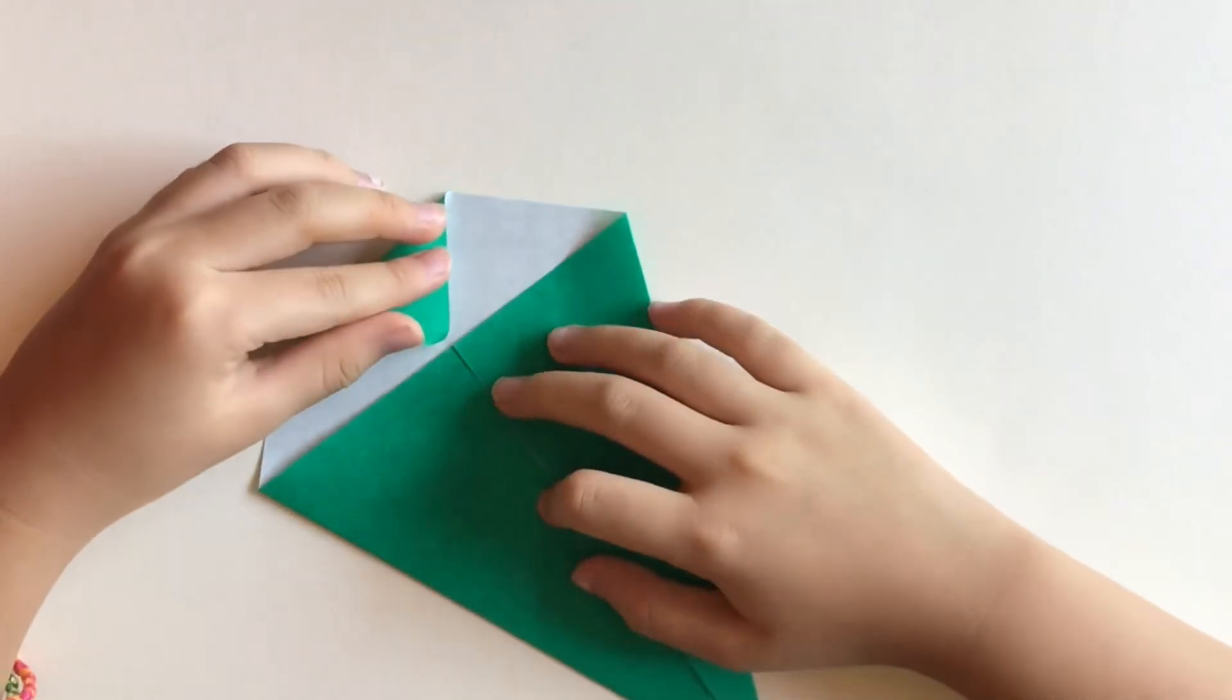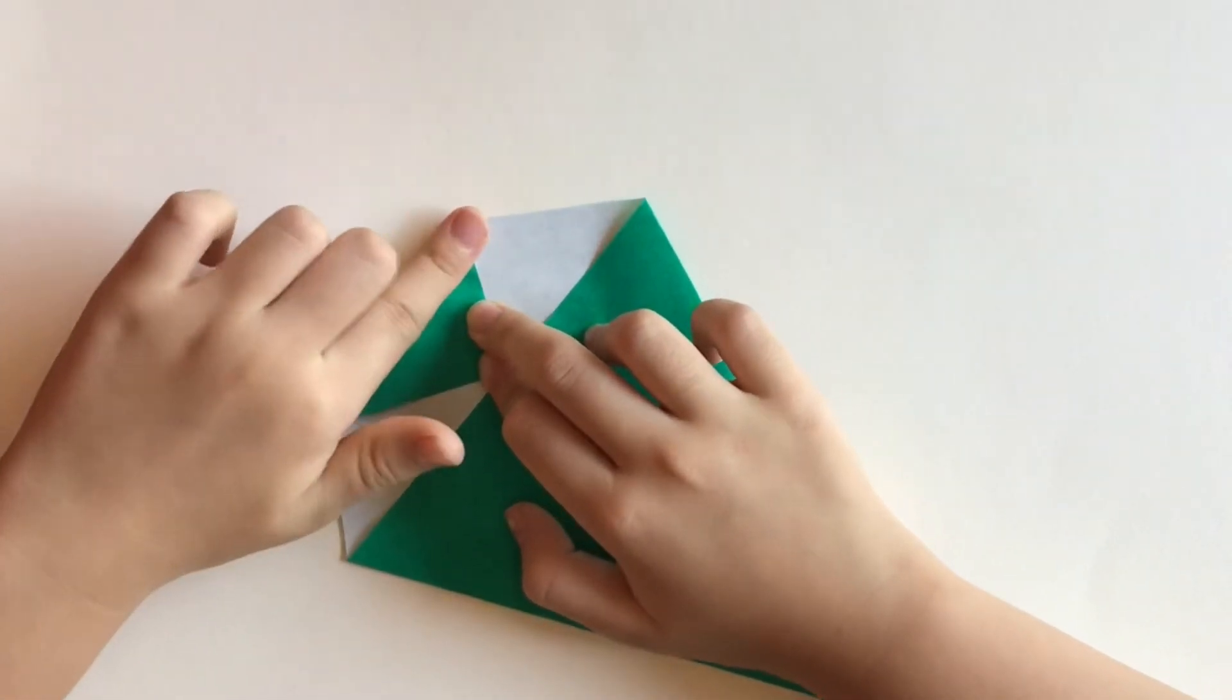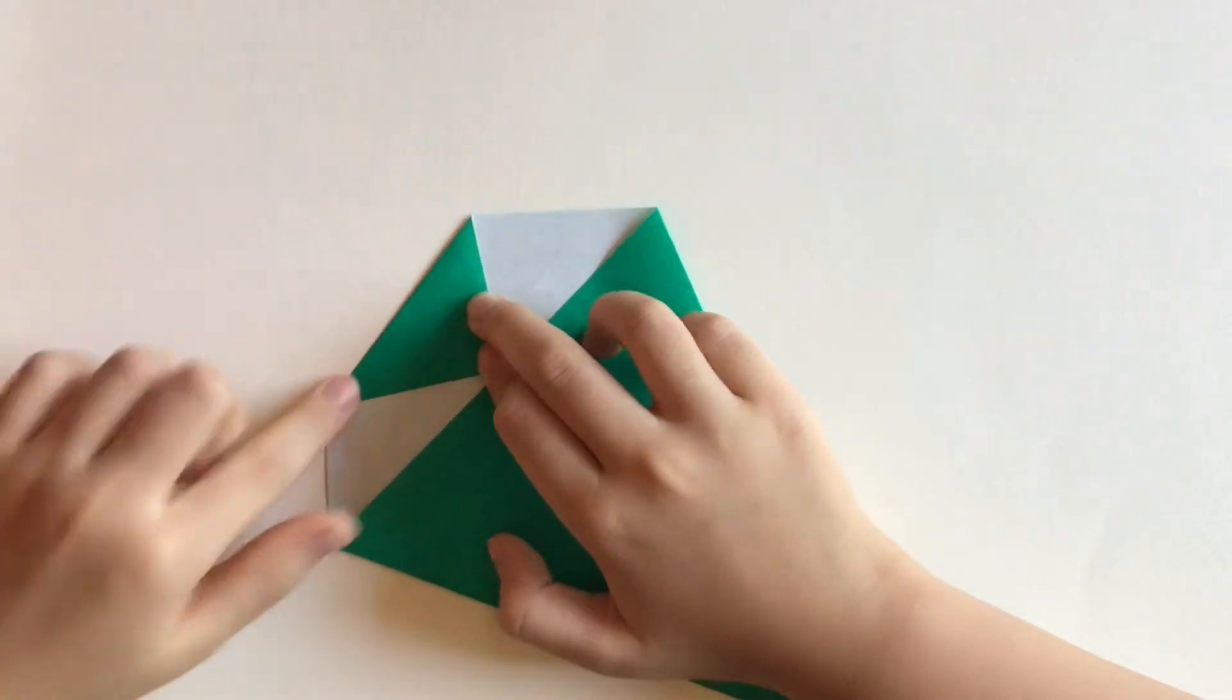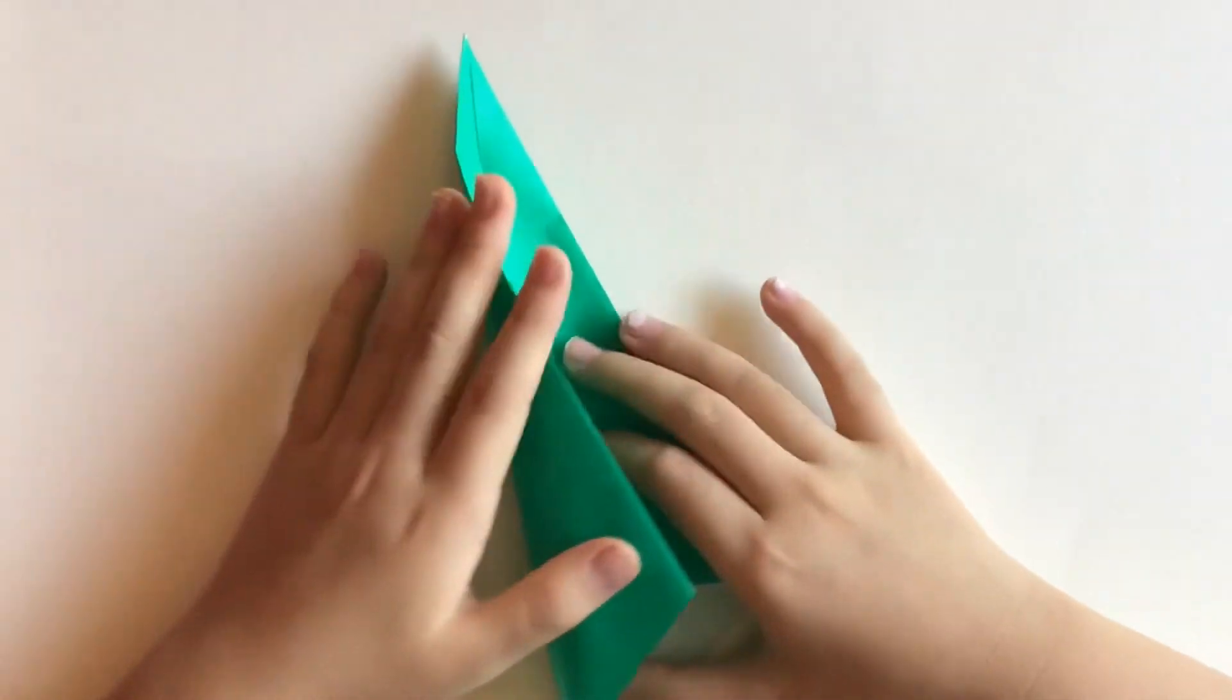Now, get the top of your kite and fold it down. Next, get your kite shape and fold it in half.